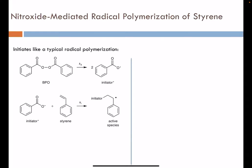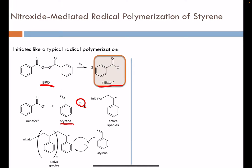Initiation is similar to what we've seen in previous videos. Benzoyl peroxide is used, and two initiator molecules are expected. We showed how the initiator can decompose into phenyl-based radicals as well as benzoyl-based initiators, and we expect that one or both of those can play a role in the initiation of styrene to give our first activated styrene — here's our activated species ready for further propagation reactions.